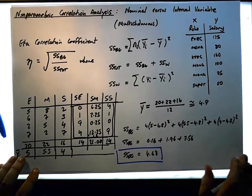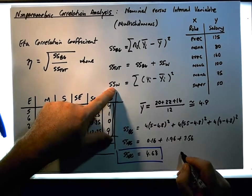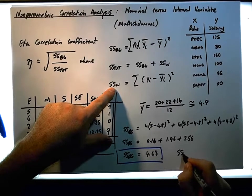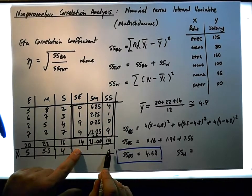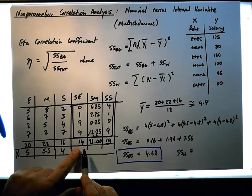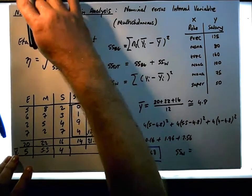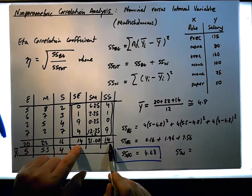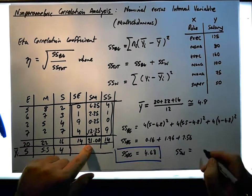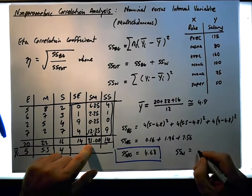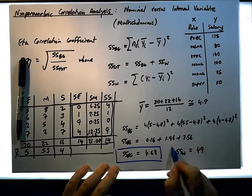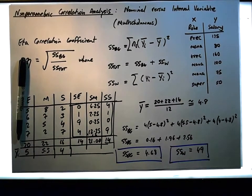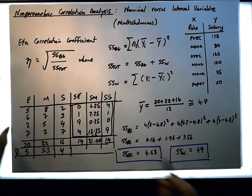So now we can actually calculate the sum of squares within measure. The sum of squares within measure is simply the sum of these values here. We have 14 and 14 gives us 28, plus 1 gives us 29, plus 20 is going to give us 49.